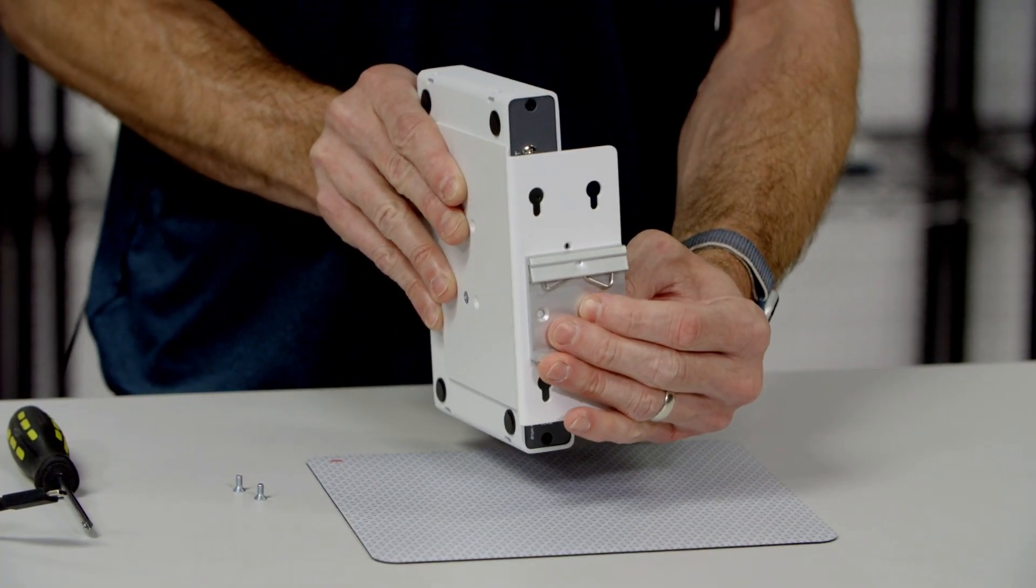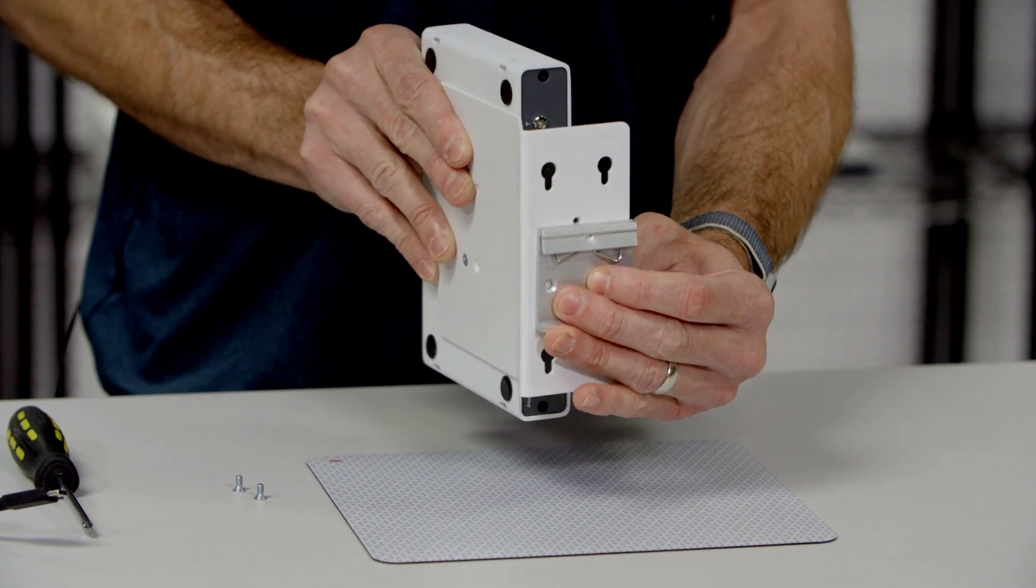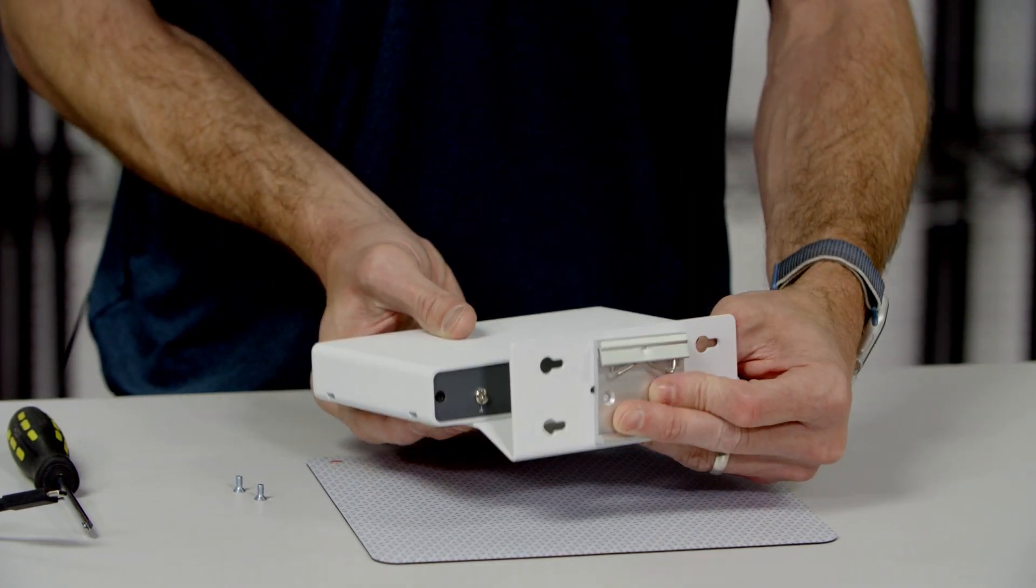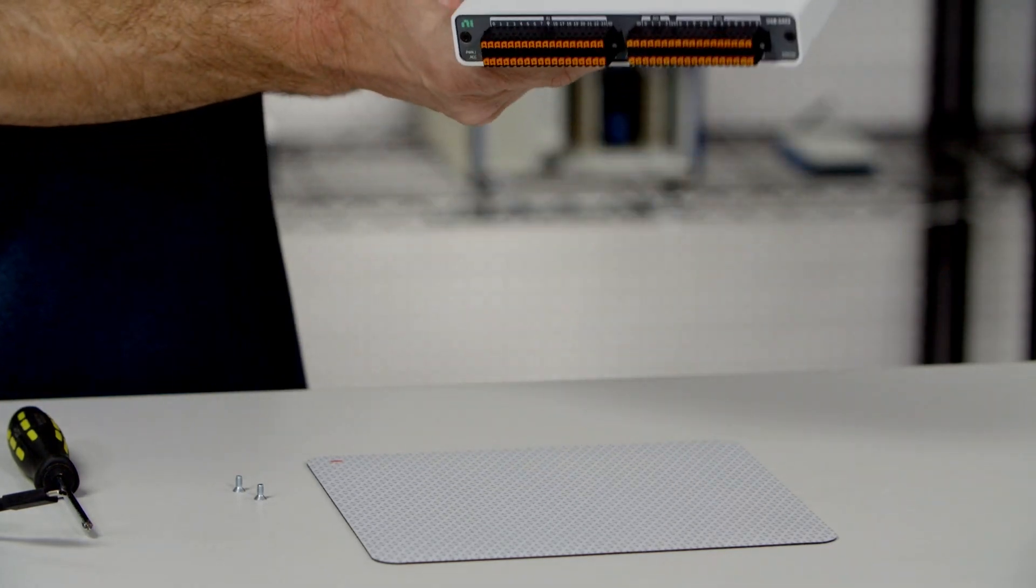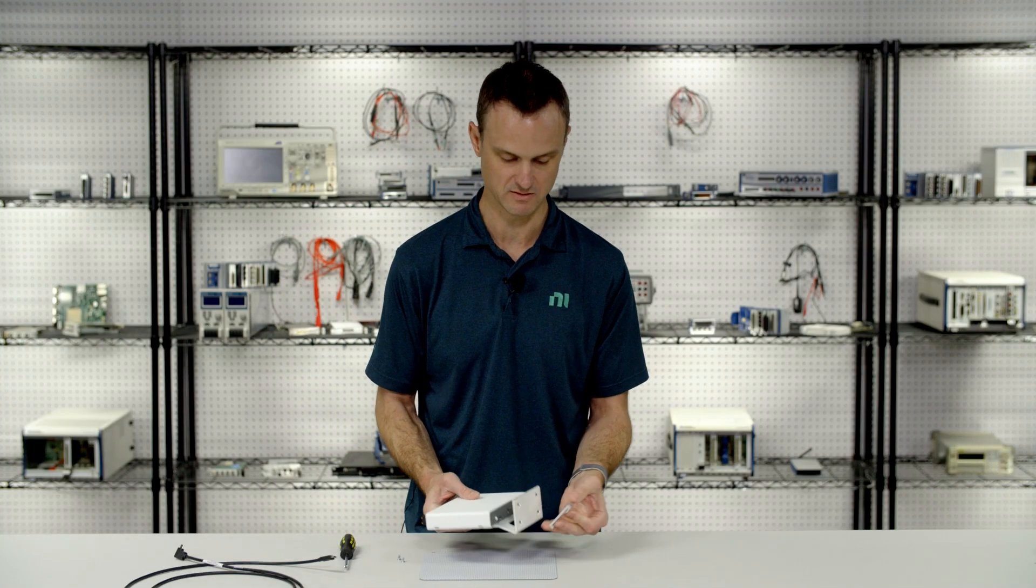Two of the holes are for the horizontal mount, and then two of the holes are if I want to rotate it and mount it on a DIN rail straight out. So you have a wide variety of options.